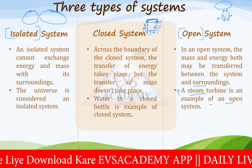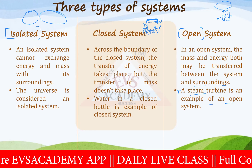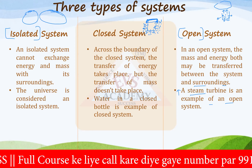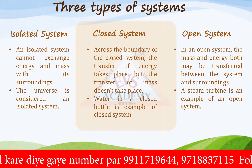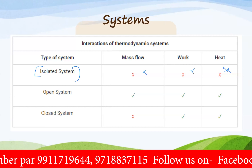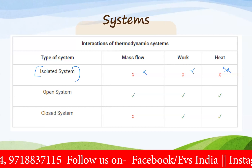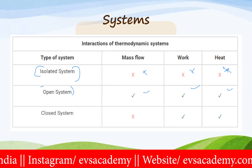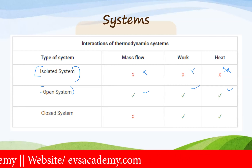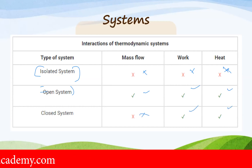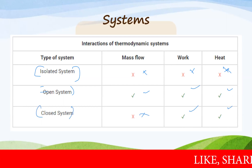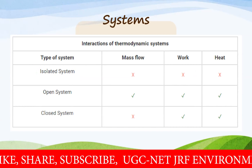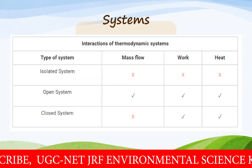Here is a summary of the three thermodynamic systems. In an isolated system, no mass flow, no work, and no heat exchange takes place — it is totally isolated, like the universe. In an open system, mass flow, work, and heat flow all take place, like a steam turbine. In a closed system, only mass flow is not allowed, but work and heat exchange are allowed. Every system in the universe is one of these three types.